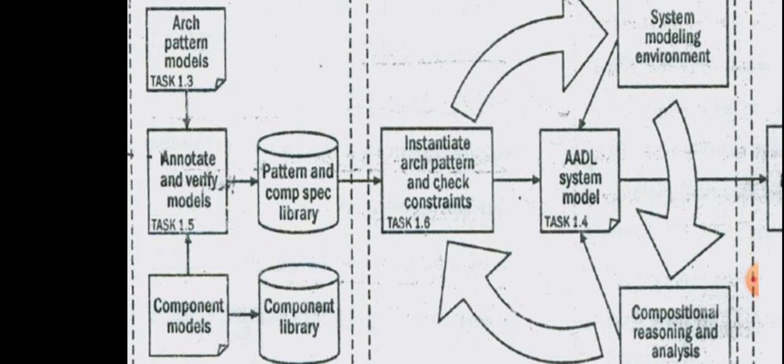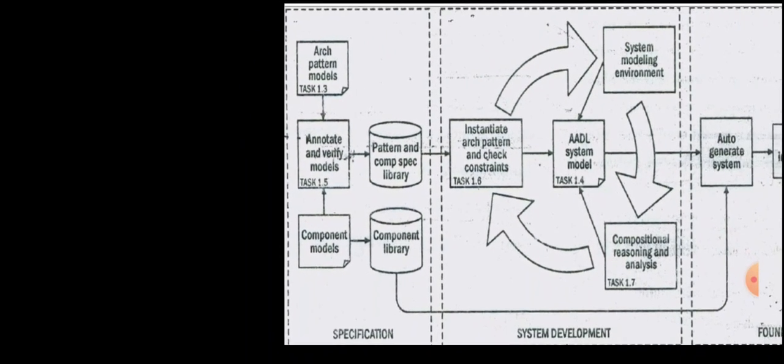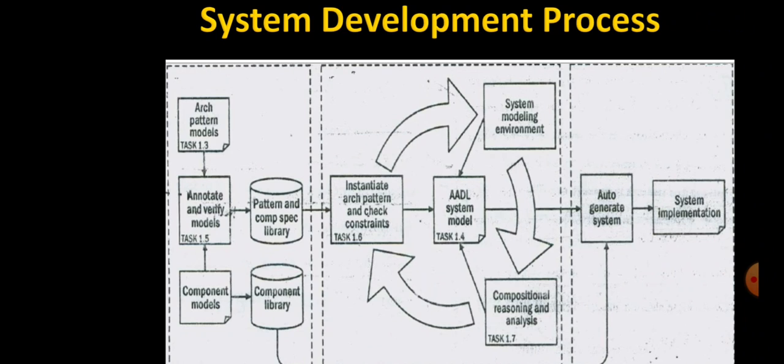As new patterns are identified, they will be formally modeled and the key properties will be specified. These constraints may include the external environment of the system, the physical system being controlled, and the interfaces with other systems. The annotated and verified models are shown along with the component library and pattern-specific library. The resulting annotated models are published in library form for consumption by the system development phase.